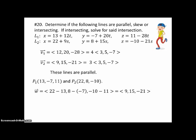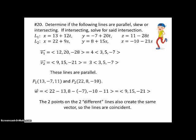and therefore these two lines are the same. The two points on the two different lines also create the same vector, and so the lines are coincident. They're not different lines, they're the same line.